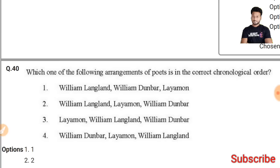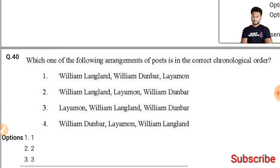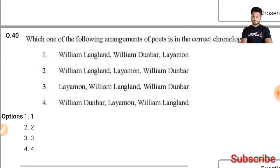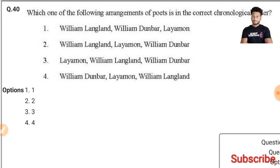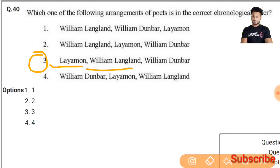Question 40: Which of the following arrangements appears in the correct chronological order? The correct chronological order corresponds to the third option: Langland, William Langland, and William Dunbar.